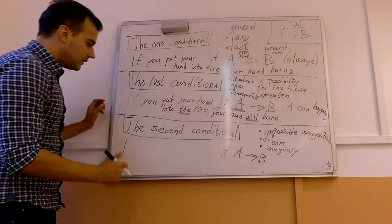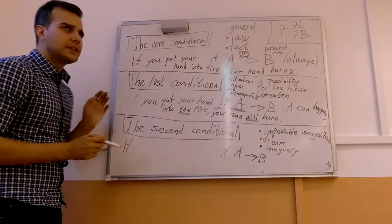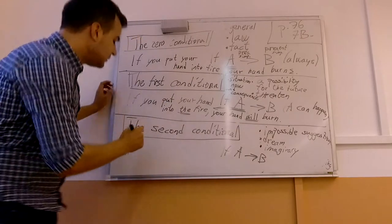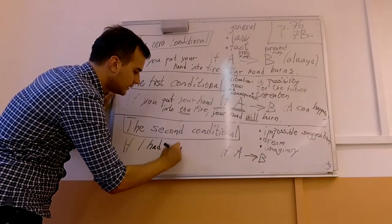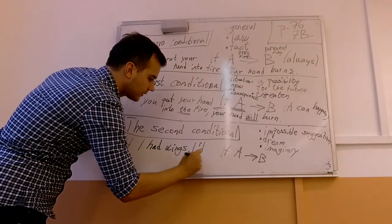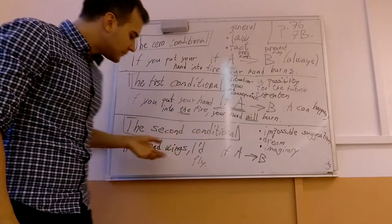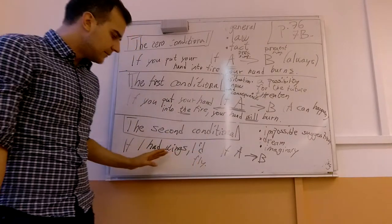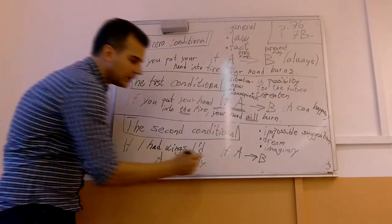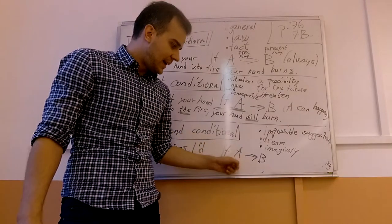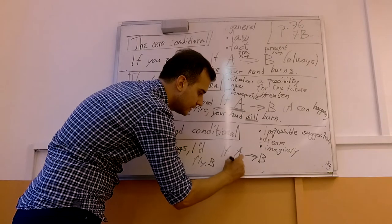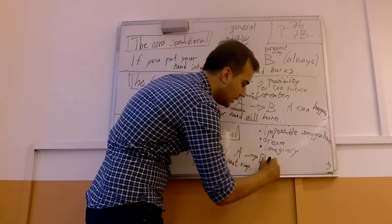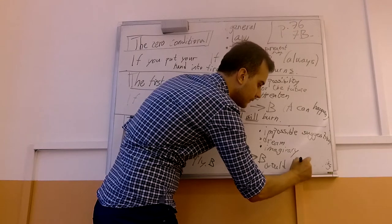That's too late — I've already done it. So let me give you a better example. If I had wings — this is A — I would fly — this would be B. So if A happened, past simple, then B would happen. In Czech: kdybych měl křídla, létal bych. If A happened, then B would happen. But look — is it a possibility? Can I have wings? I can't. So if it's something impossible, then I'm talking about a dream or something imaginary.